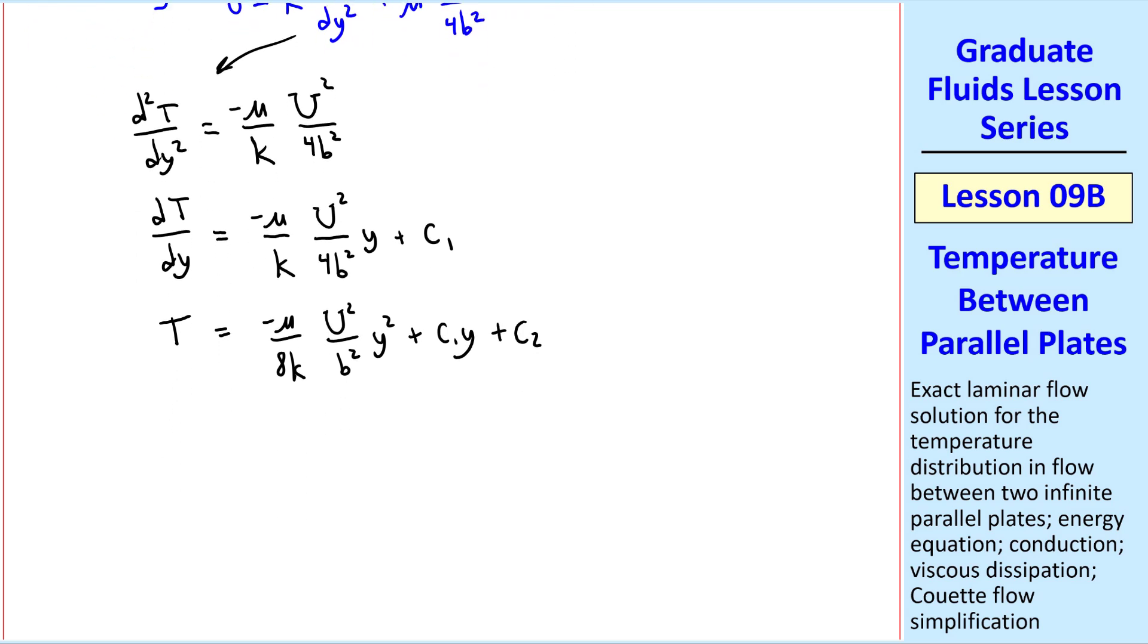This is our final equation for temperature, but we need to find constants c1 and c2. We get those from the boundary conditions, namely, at y equals 0, t equal t naught. Therefore, since y goes away in these terms, c2 must equal t naught.